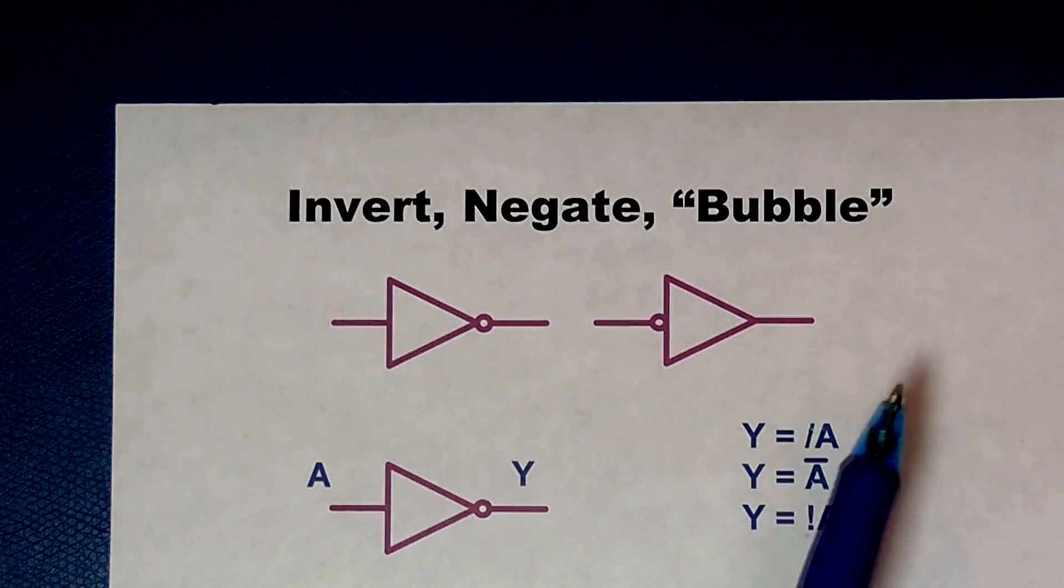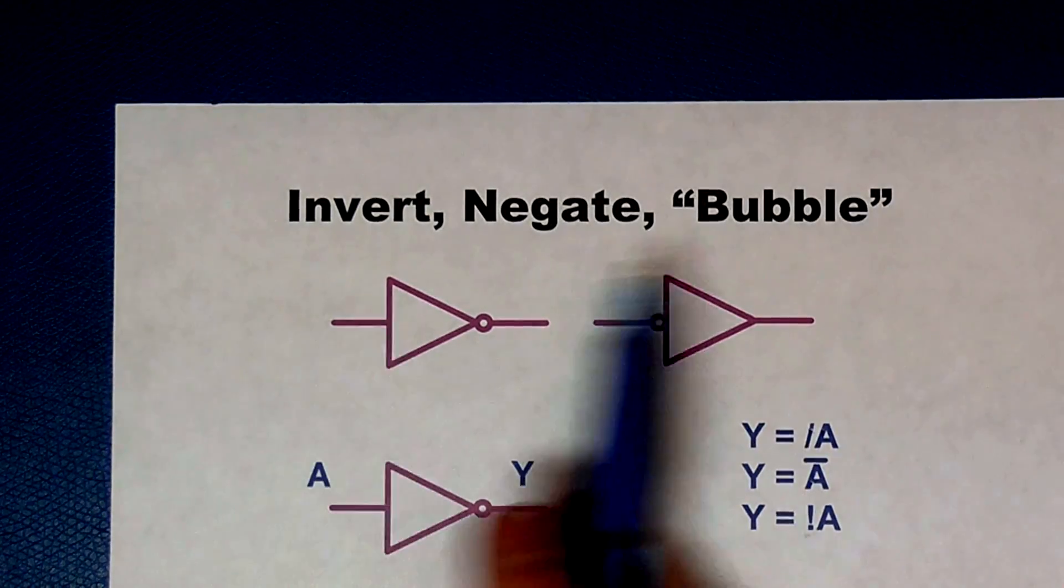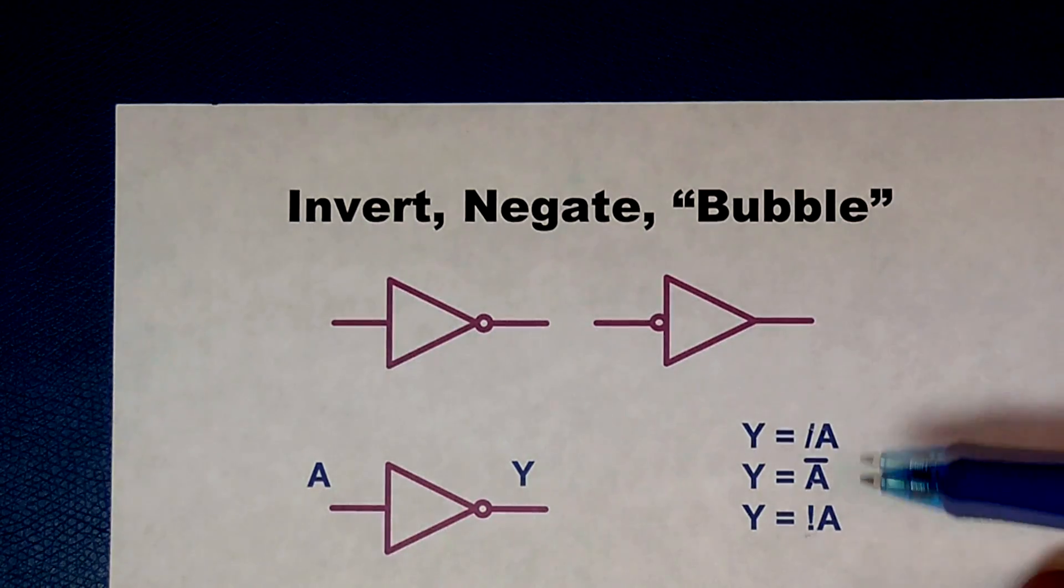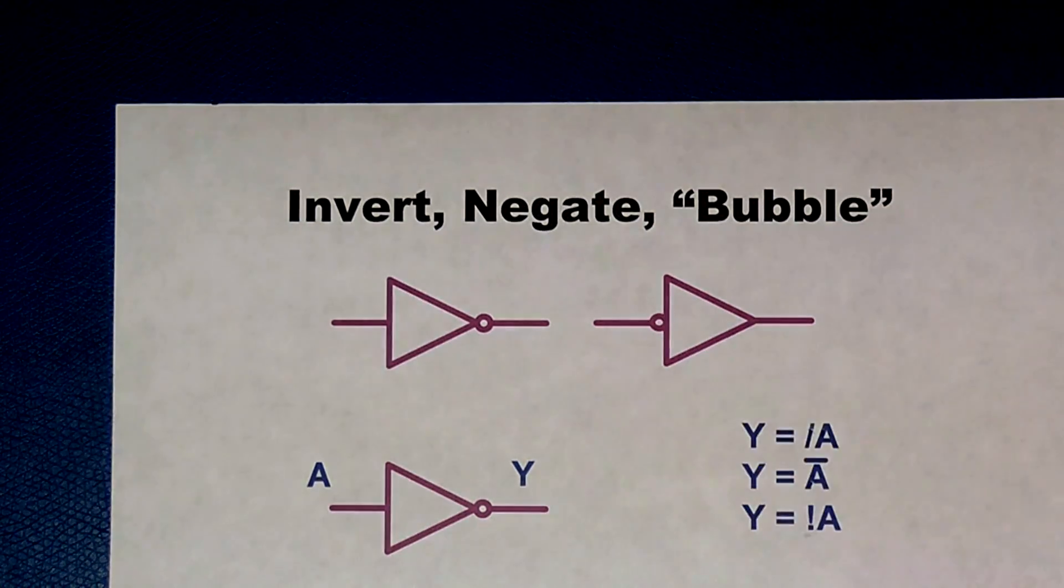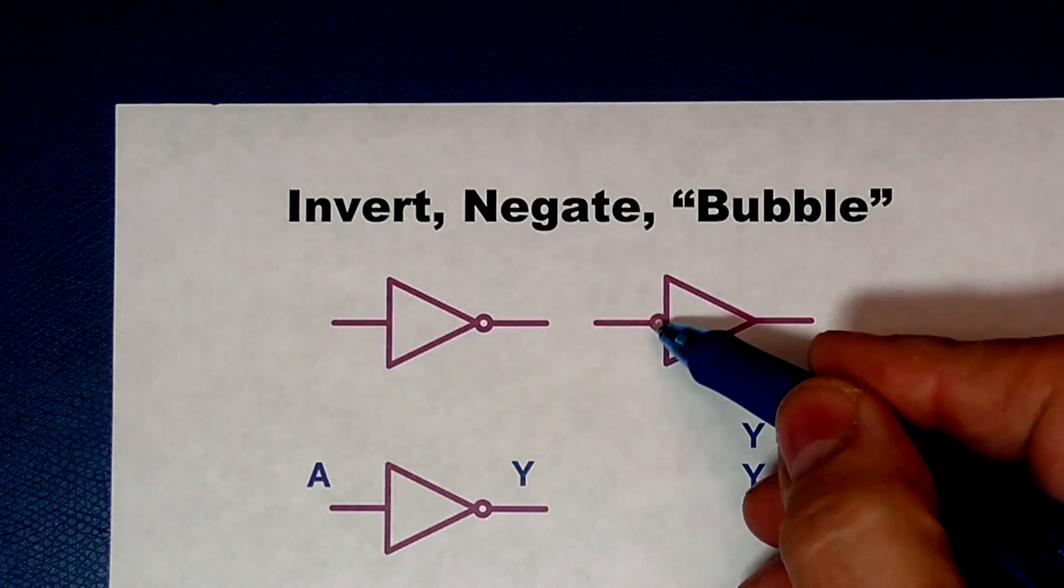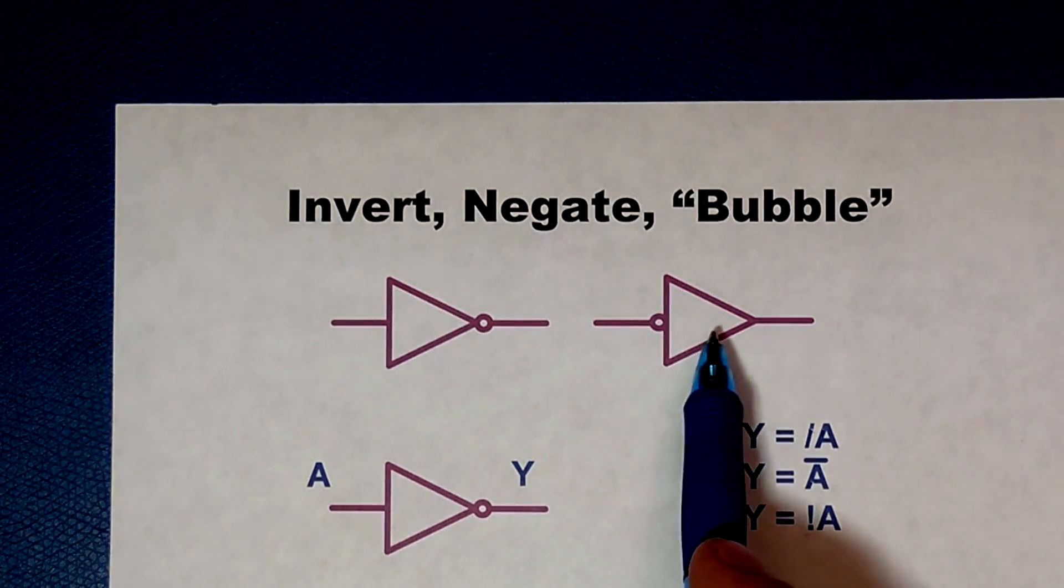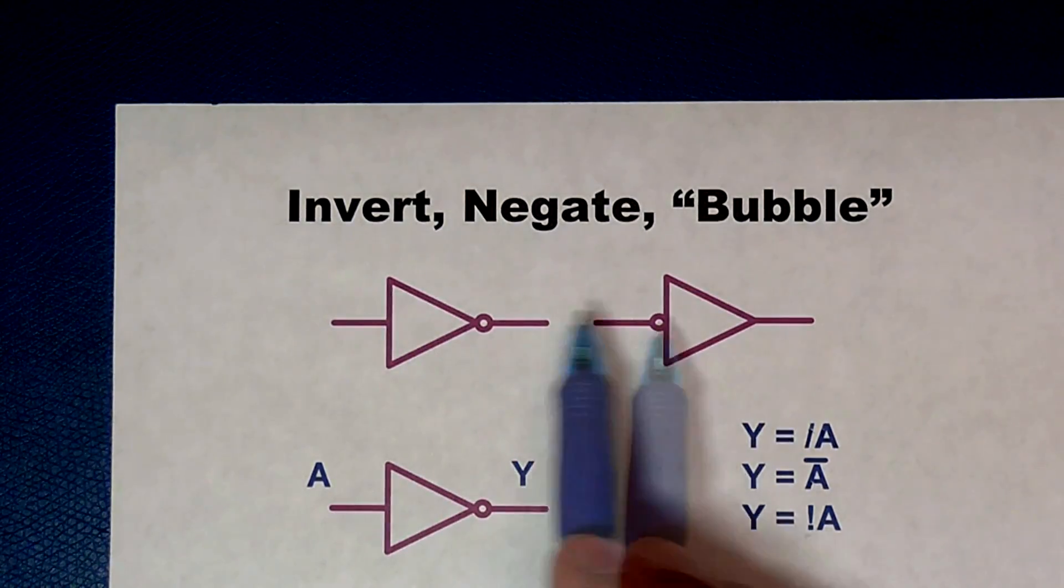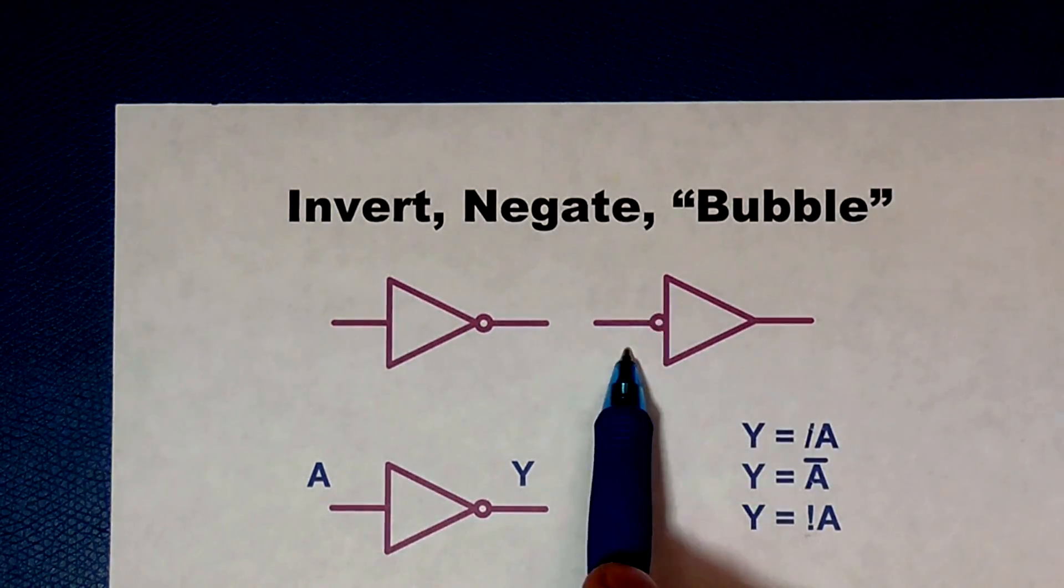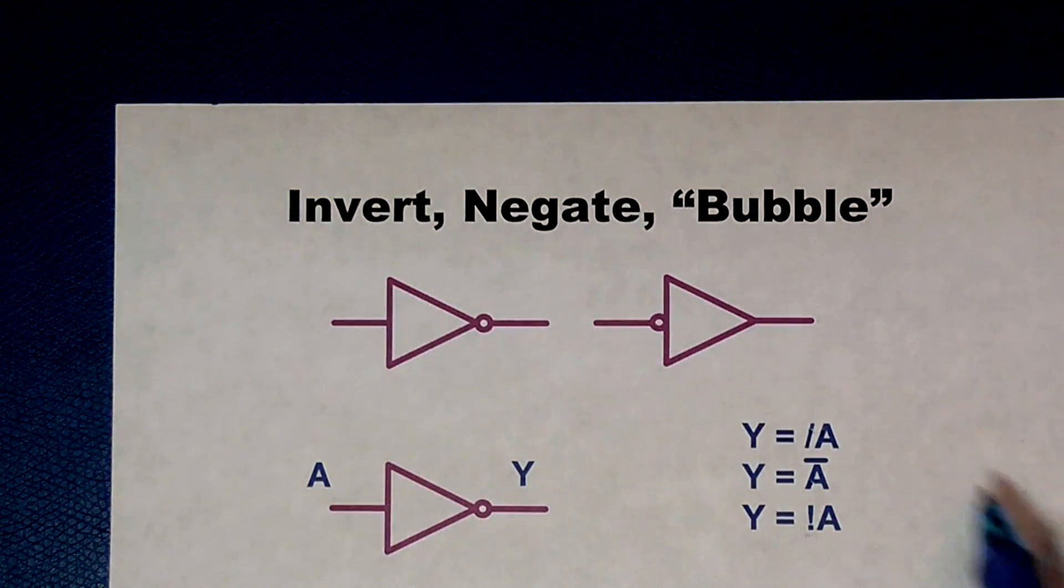Starting with a simple inverter, which takes a signal and inverts it. It negates it. Sometimes we used to call it bubbling it because this is a bubble here that is the symbol for a true low. And so we would actually use it as a verb. But be aware that most of these components, logic gates, can be drawn with an alternate symbol. In this case, it's still an inverter. But what I'm saying is, I was looking for a low to make a high as applies to a high to make a low. But this is an aid for helping you think about your logic if it gets real complicated. Here's the equations for it. And I've shown three different ways to draw the equation.